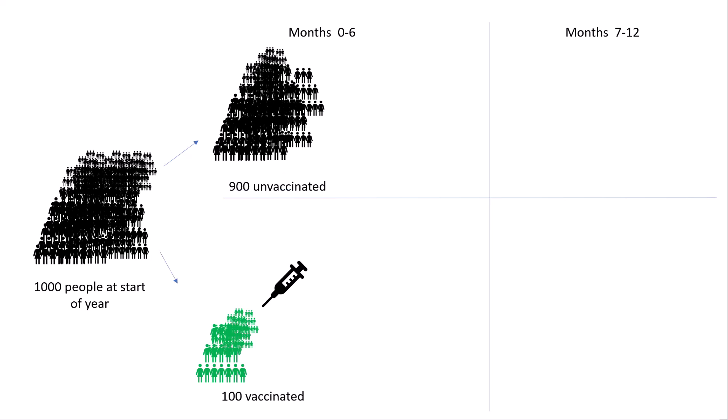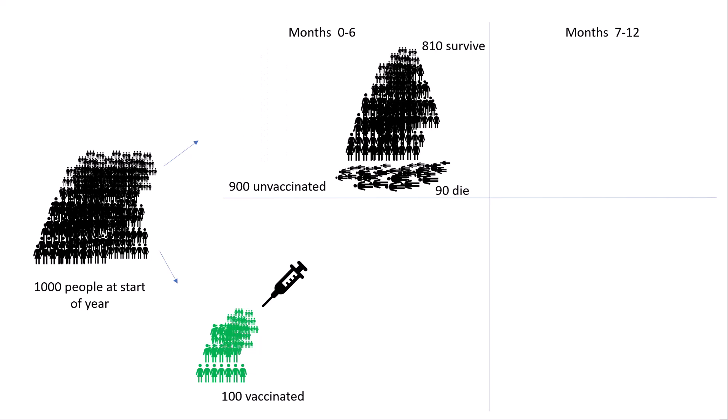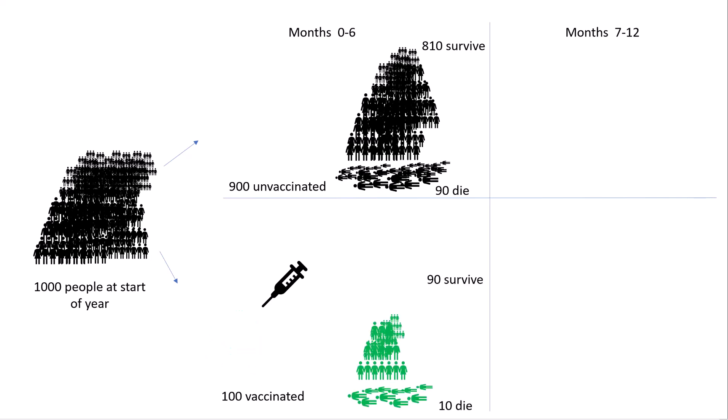So 100 are vaccinated in the first six months. At the end of the six months, 10% of the unvaccinated, which is 90, are going to die, so 810 survive. And of the 100 who got vaccinated at the start of the period, 10 will die, so 90 are going to survive.